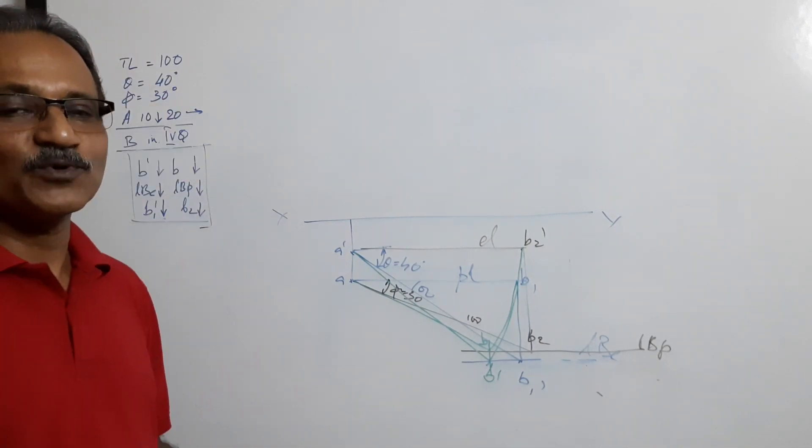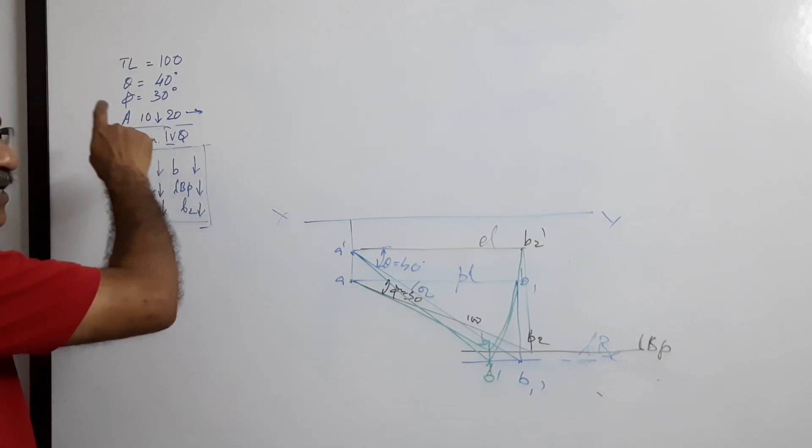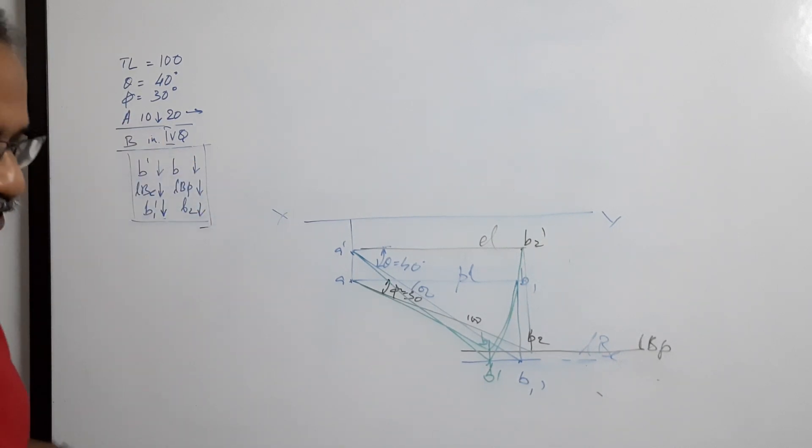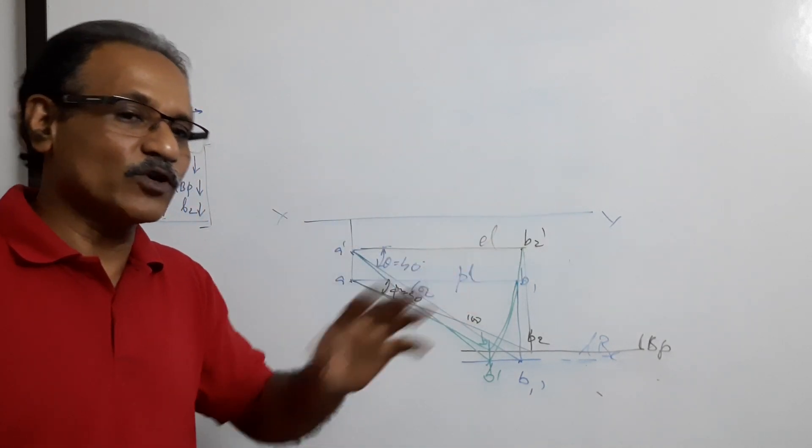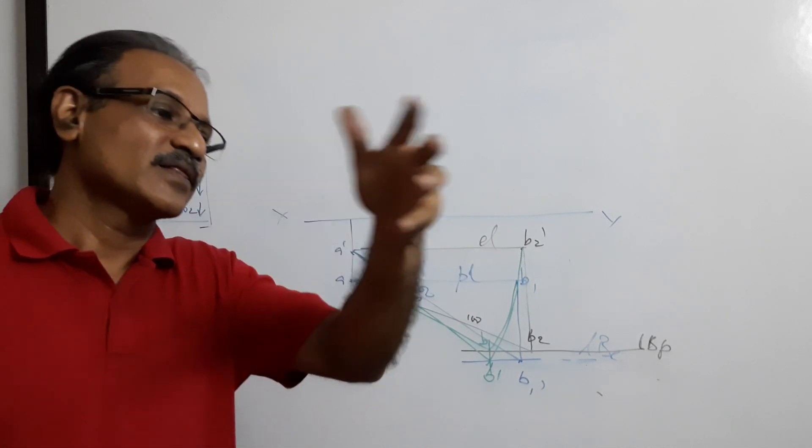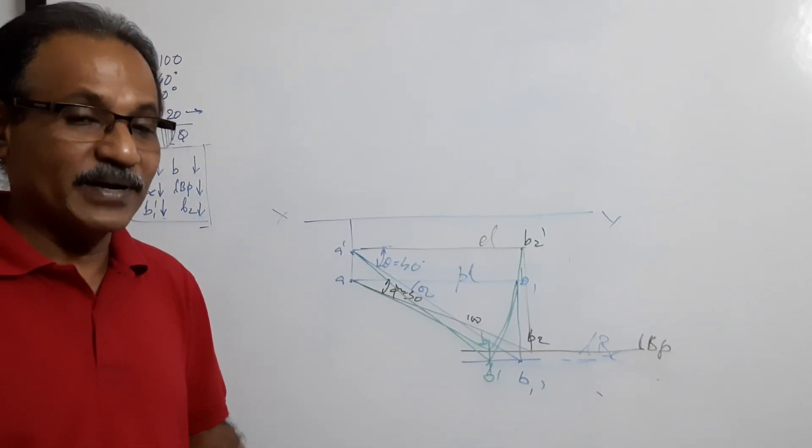The first reference problem was same with A in first quadrant and B in first quadrant. Then I have changed the position of A and also B. B was brought to all the four, then A was changed to second.